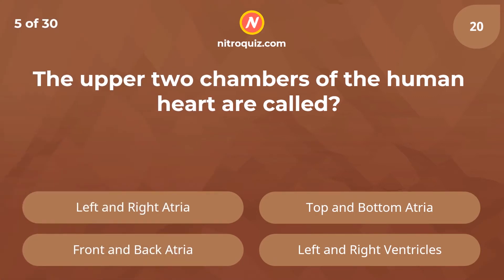The upper two chambers of the human heart are called — answer is left and right atria.